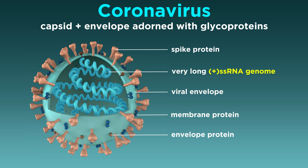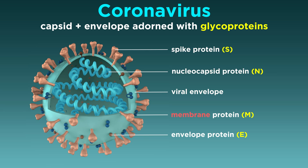Coronaviruses have the longest positive sense RNA genome among viruses, part of which encodes four glycoproteins that are important for their success. These are spike, membrane, envelope, and nucleocapsid glycoproteins, abbreviated as S, M, E, and N, respectively.